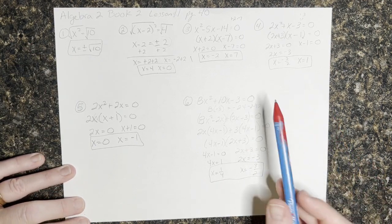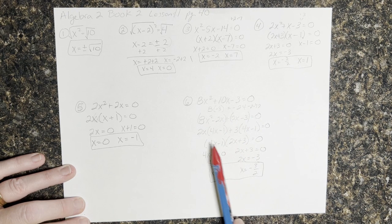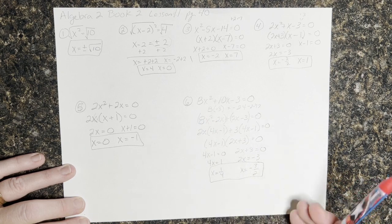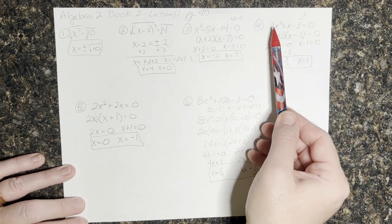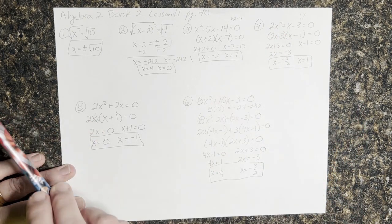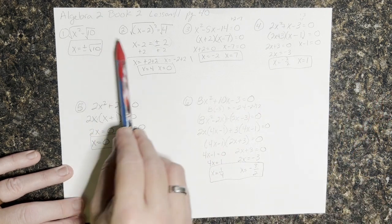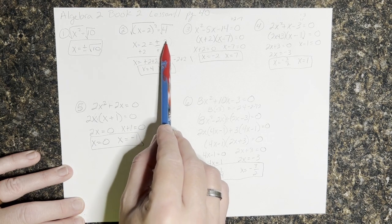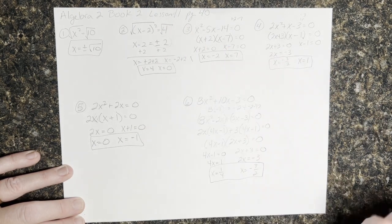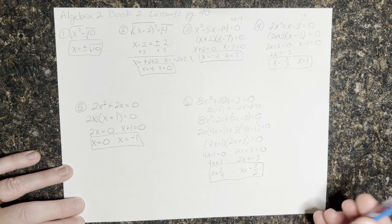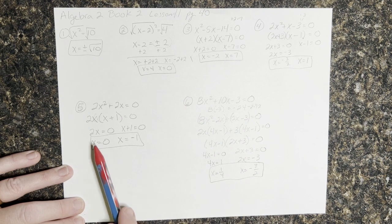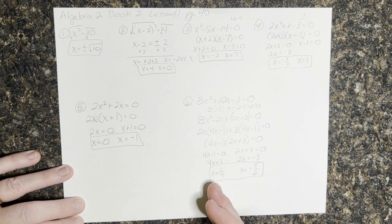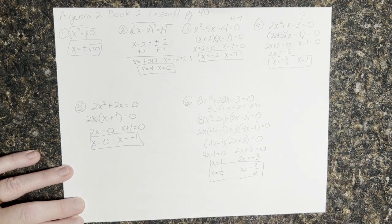This trick makes factoring a little bit easier, especially when the coefficient of the quadratic term is large or not 1. Factor when you can factor. Sometimes we just take the square root — remember when we do that, we get the plus or minus of whatever is on the right side. Then set each factor equal to 0 and solve. Good job — that's Lesson 11. Finish the rest and I'll meet you back here for Lesson 12.